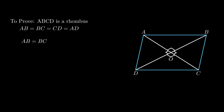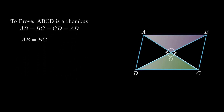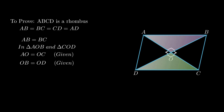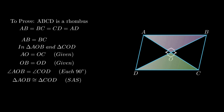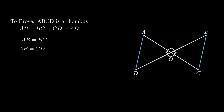Similarly, to prove AB = CD, consider triangle AOB and triangle COD. Since diagonals bisect each other, AO = OC and OB = OD. Also angle AOB = angle COD = 90 degrees. By the side-angle-side rule, triangle AOB is congruent to triangle COD. By corresponding parts of congruent triangles, side AB = side CD.